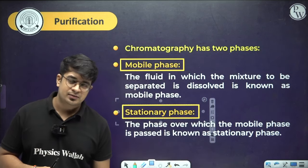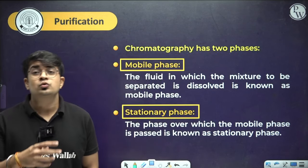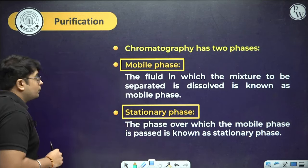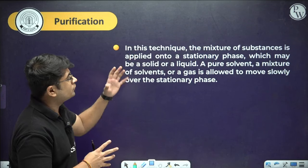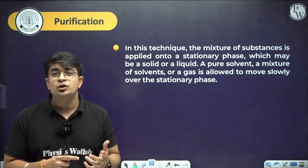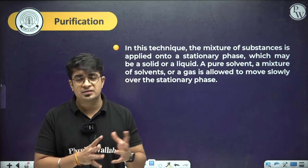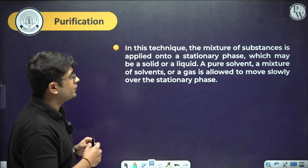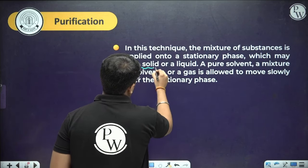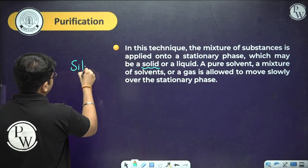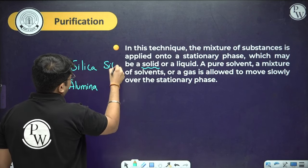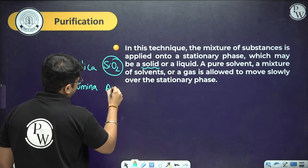There are different types of chromatography: paper chromatography and column chromatography, depending on the principle involved. The mixture of substances is applied onto the stationary phase, which is commonly alumina (Al₂O₃) or silica (SiO₂). A pure solvent, a mixture of solvents, or a gas is then allowed to move slowly over the stationary phase.